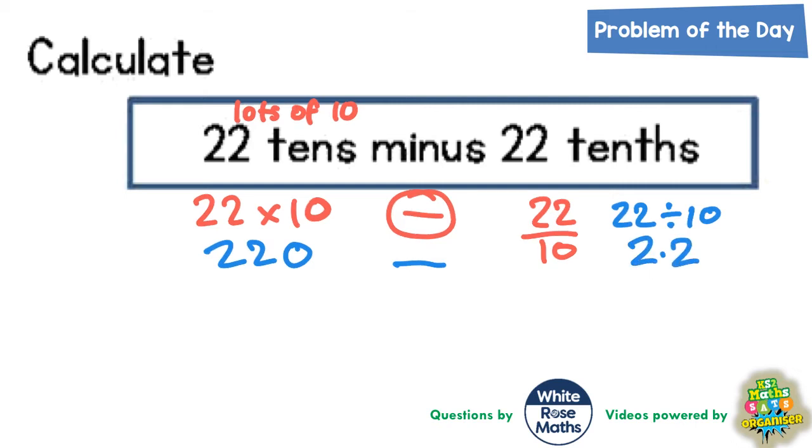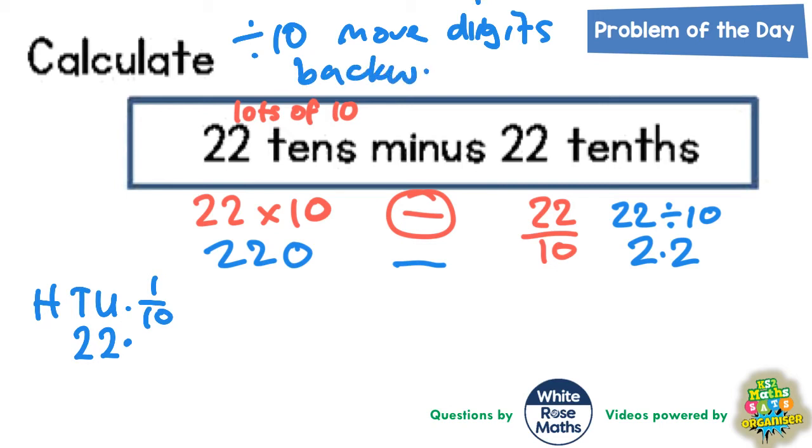And that's because if you write down the place value headings, hundreds, tens, units, and tenths, and put 22 in there, 22. If you're dividing that by 10, then all the digits move backwards one place. Divide by 10, move digits backwards one place.